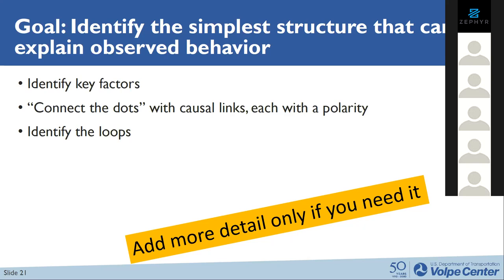We're going to go into the exercise and try to identify the simplest causal structure that can explain the observed behavior. The steps are: identify the key factors, indicate the causal links connecting them with a polarity (if one goes up, does the connected factor tend to go up or down?), and identify the loops, which help you think about feedback within the structure. This exercise would normally be done on whiteboards in small groups or at conference tables with Post-its. It's not something you should do alone — the idea is to get people who know more or less about different pieces of the system to work together.